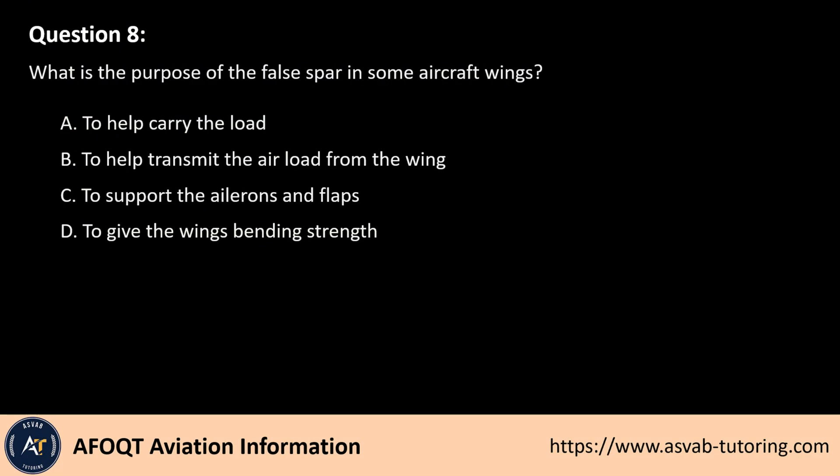Question 8. What is the purpose of the false spar in some aircraft wings? A. To help carry the load. B. To help transmit the air load from the wing. C. To support the ailerons and flaps. D. To give the wings bending strength.